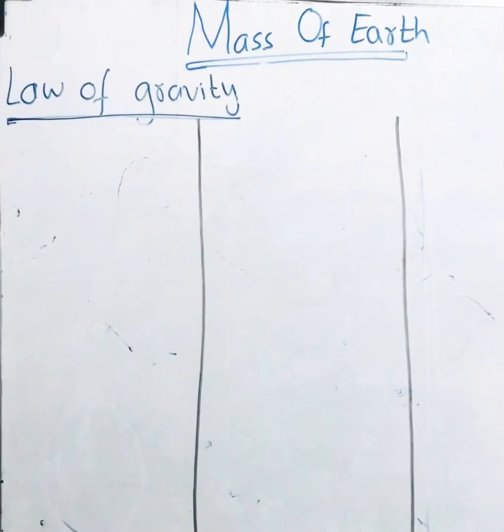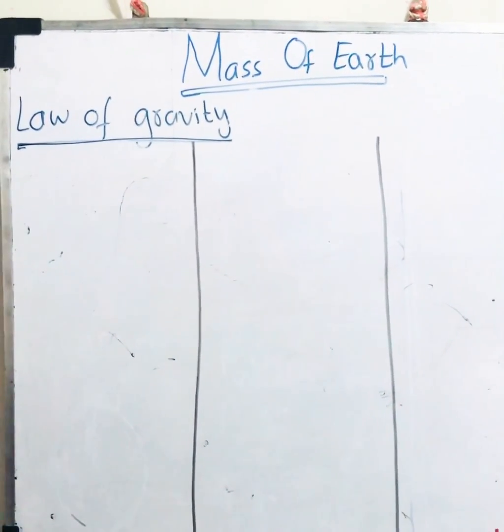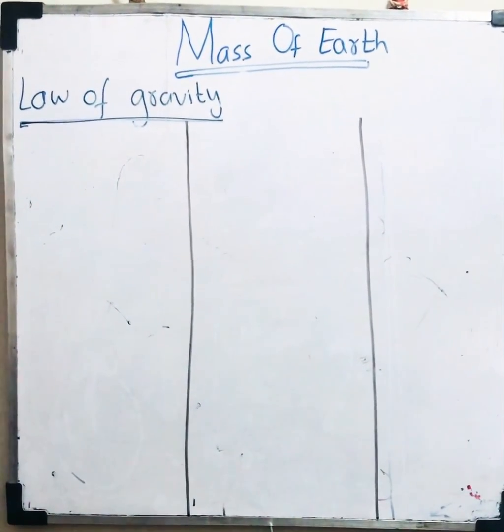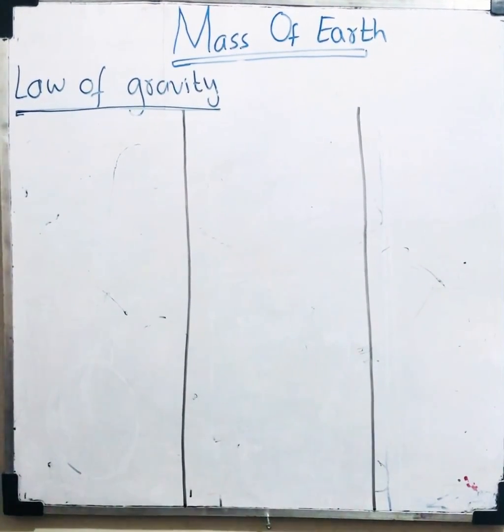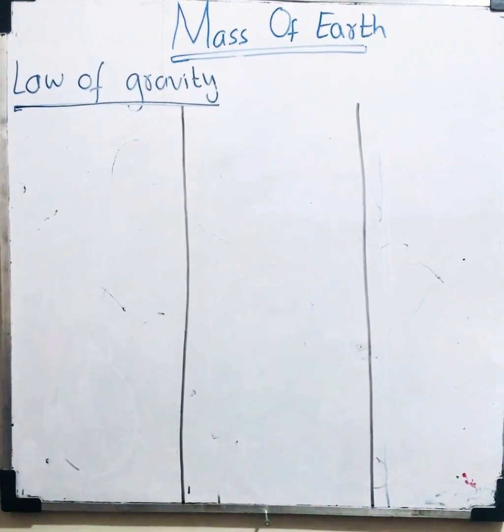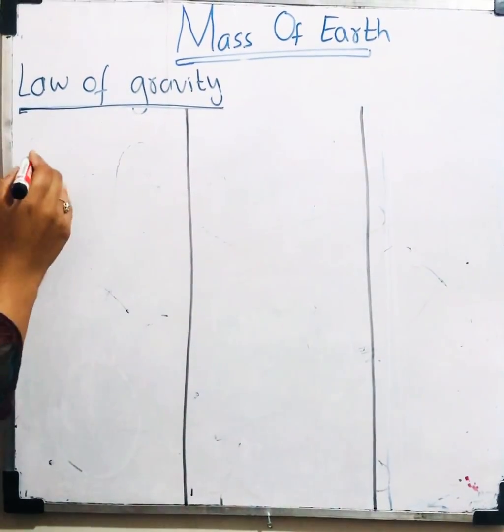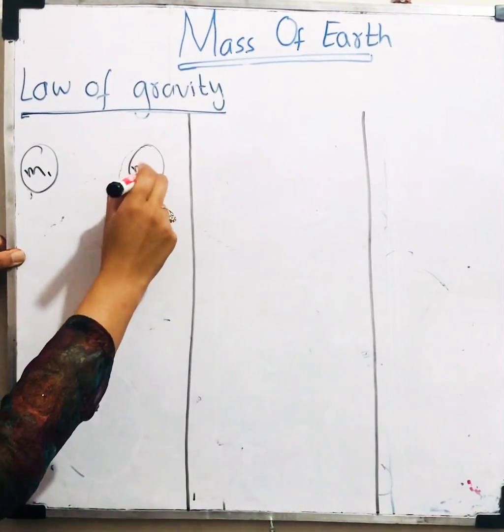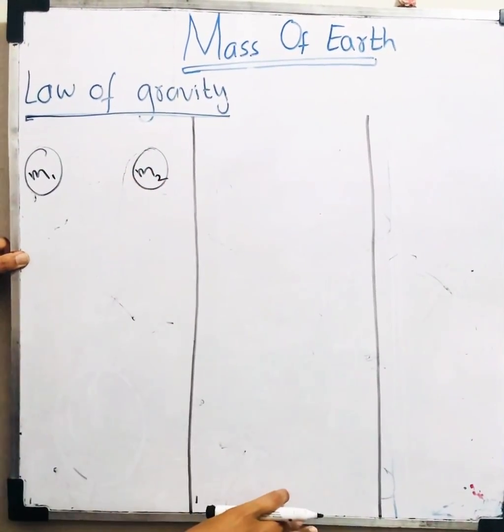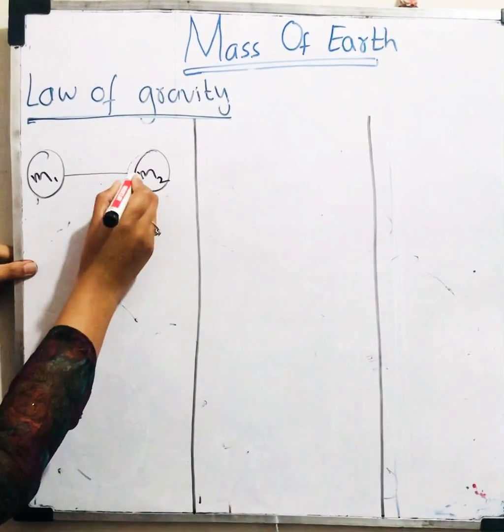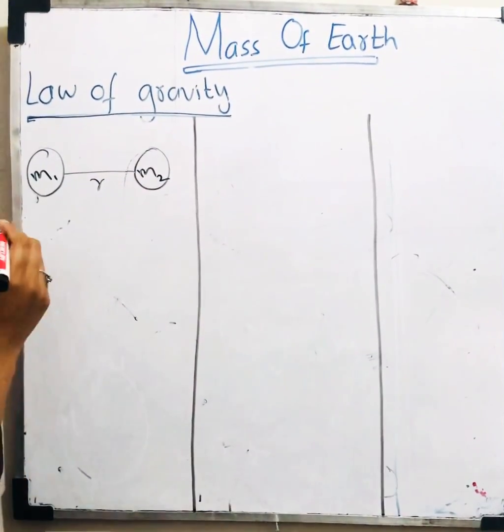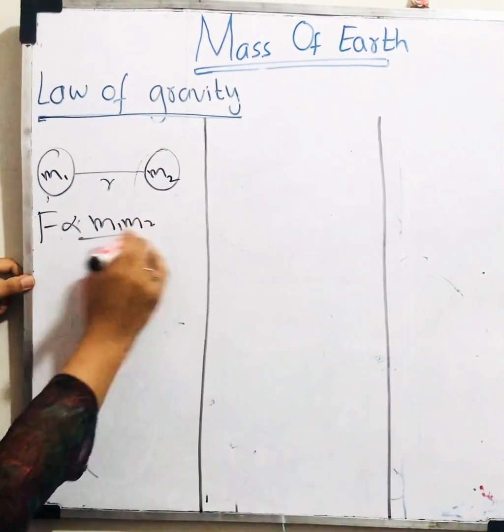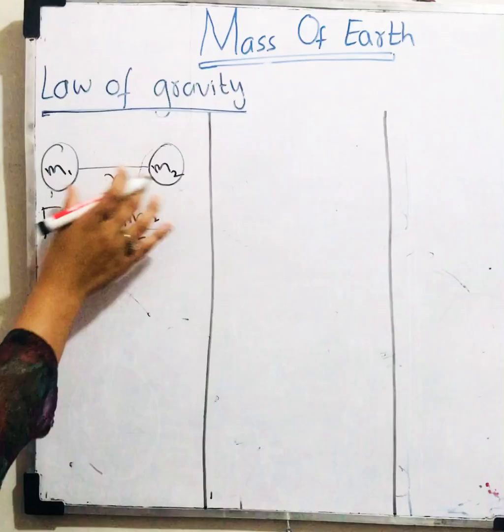For this you have to consider law of gravity first. According to Newton's law of gravitation, everybody in the universe attracts other objects with a force which is directly proportional to product of masses and inversely proportional to square of distance between objects. Consider two objects with mass m1 and m2, and distance between these objects is r.